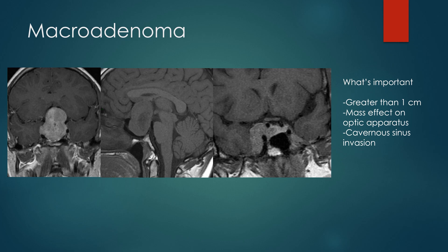A pituitary macroadenoma measures greater than one centimeter. It usually has a snowman or waist-like appearance as the mass grows through the tuberculum sellae. The important things to describe are: it must measure greater than one centimeter, and whether there is mass effect on adjacent structures. In this case, the optic apparatus is completely displaced superiorly with stretching of the optic chiasm and optic nerves. You also look for cavernous sinus invasion — to suggest invasion, you need to see mass greater than 270 degrees around the circumference of the cavernous internal carotid artery; less than 270 degrees, it may abut the dura without necessarily invading.